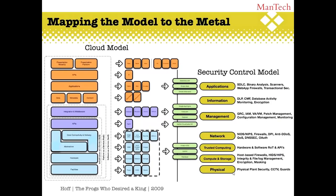Looking at compute and storage as part of the hardware trust boundary, we're talking about host-based firewalls, host intrusion detection services, host intrusion protection services, integrity and file log management, and encryption masking. These are the common things normally associated with compute storage. This is just to give a generic understanding of how these things interact — there are much finer grain control models than this.